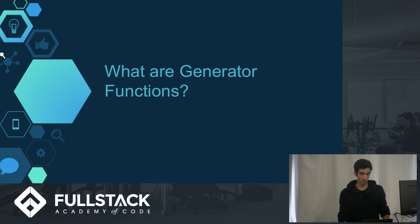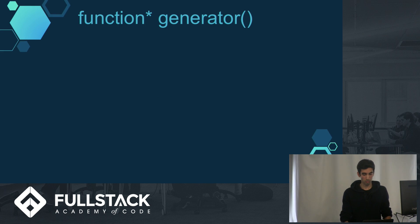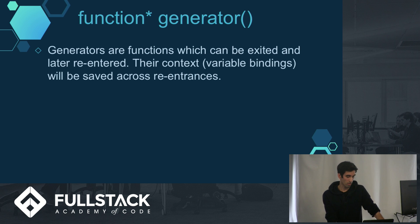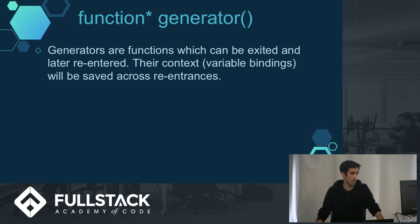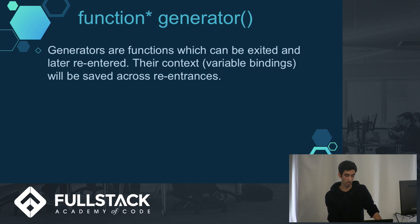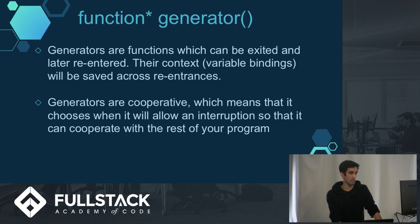So what are generator functions? We've typically assumed that a function will run to completion, but generators are a little bit different. The official definition is that generators are functions which can be exited and later re-entered, and their context will be saved across re-entrances. This effectively means you can pause the function and then restart it later when you're ready. Generators are also cooperative, which means we choose when to pause the function, it doesn't stop other code from running, and then we have to re-initiate it when we're ready.